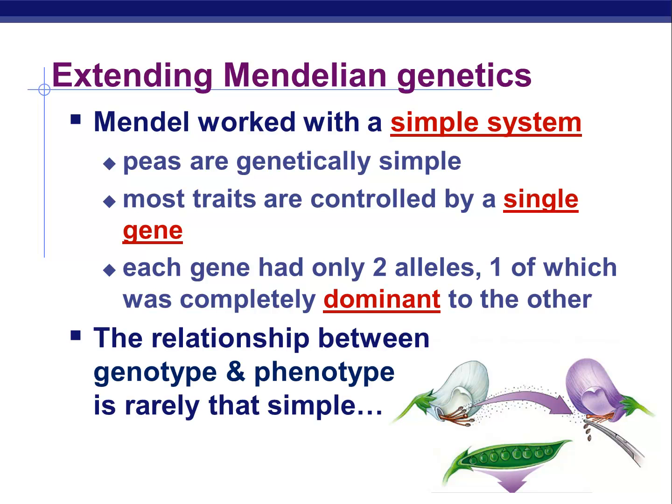But it turns out that in the real world, things are usually more complicated. We have talked about a few things that are much more complicated, like human skin color, but sometimes it's just a little bit more complicated — it might still be one gene, but it's not just a simple dominant-recessive relationship. And that's what we're going to look at today.